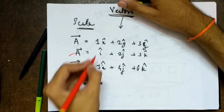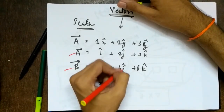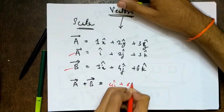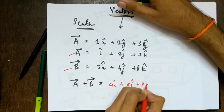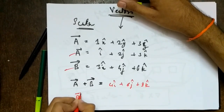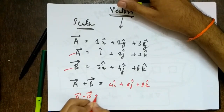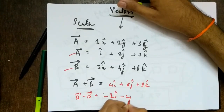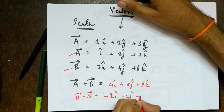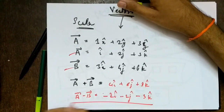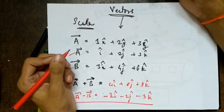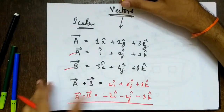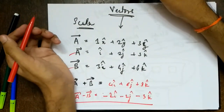So what will A vector plus B vector be? I add the corresponding i, j, and k terms. The result is four i-cap plus six j-cap plus nine k-cap. Similarly, A vector minus B vector gives minus two i-cap minus two j-cap minus three k-cap. This is simple addition and subtraction of vectors. Now, let's say I want to multiply those vectors — and we have two types of multiplication.